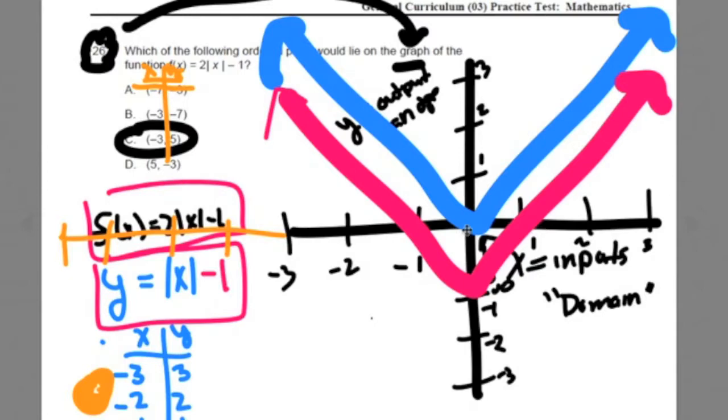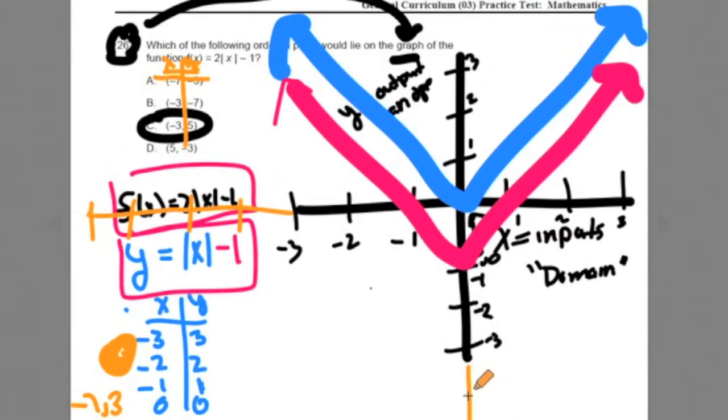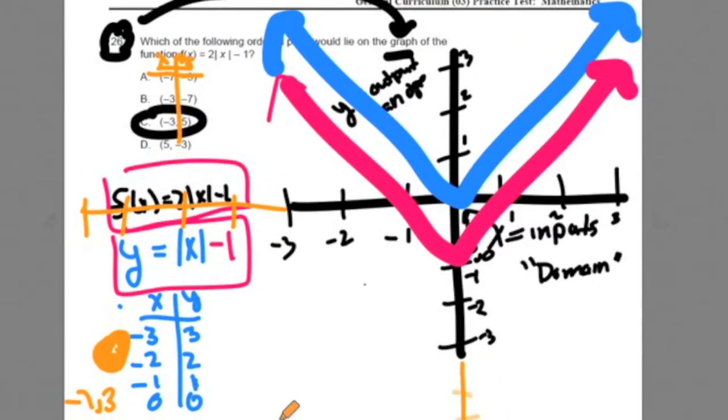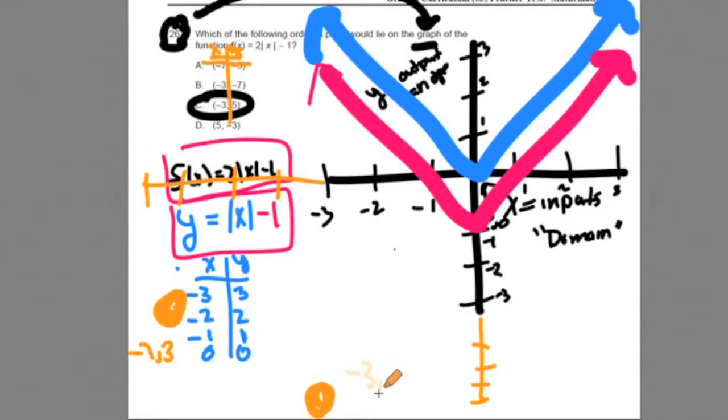What about this one? Negative 3, negative 7. Okay, negative 3 for the x's, negative 7 for the y's. That would be going on the y's. You know, negative 4, negative 5, negative 6, negative 7. That would be way down here. Negative 3, negative 7. Nowhere close to either one of our approximated graphs. Cross it out.